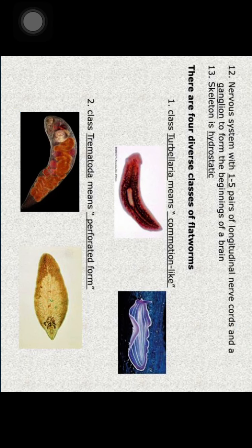The last characteristic feature is that the nervous system is ladder-like, with one to five pairs of longitudinal nerve cords and ganglia forming the beginning of a brain. There is no skeleton present in these organisms.